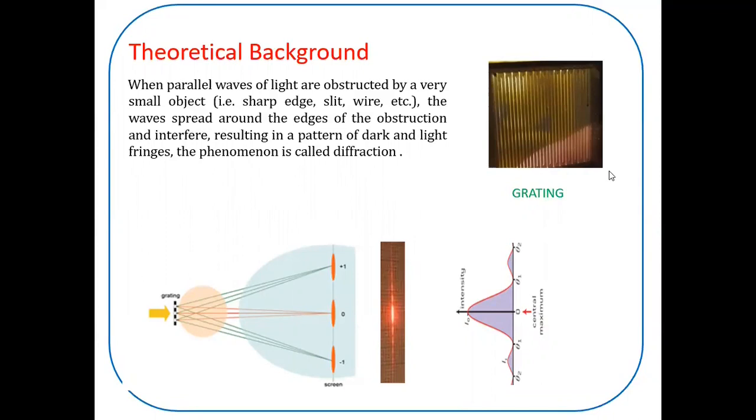I will explain how diffraction phenomena happens with the help of this diagram. When light passes through the grating, the rays which are scattered at different angles, they undergo constructive interference. And we will get a diffraction pattern like this.